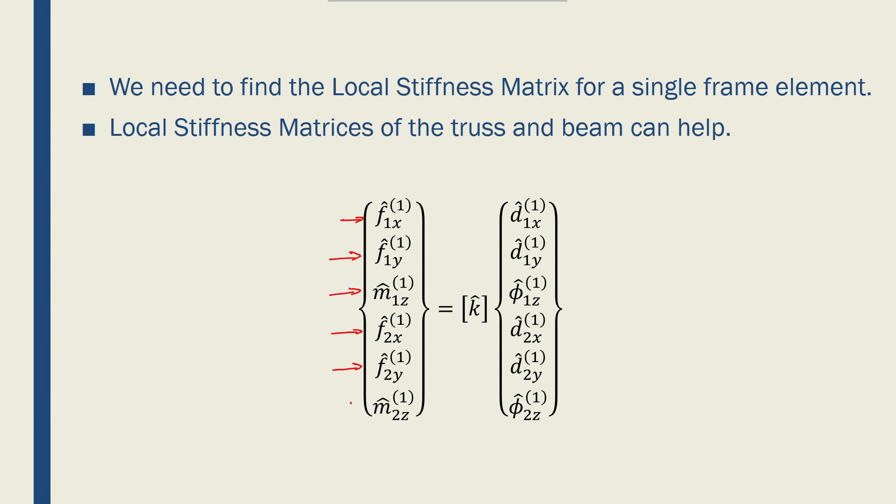F2x, F2y, M2z, which again are nodal forces in the local coordinate system, to D1x, D1y, F1z, D2x, D2y, F2z, which are the nodal displacements for each element.